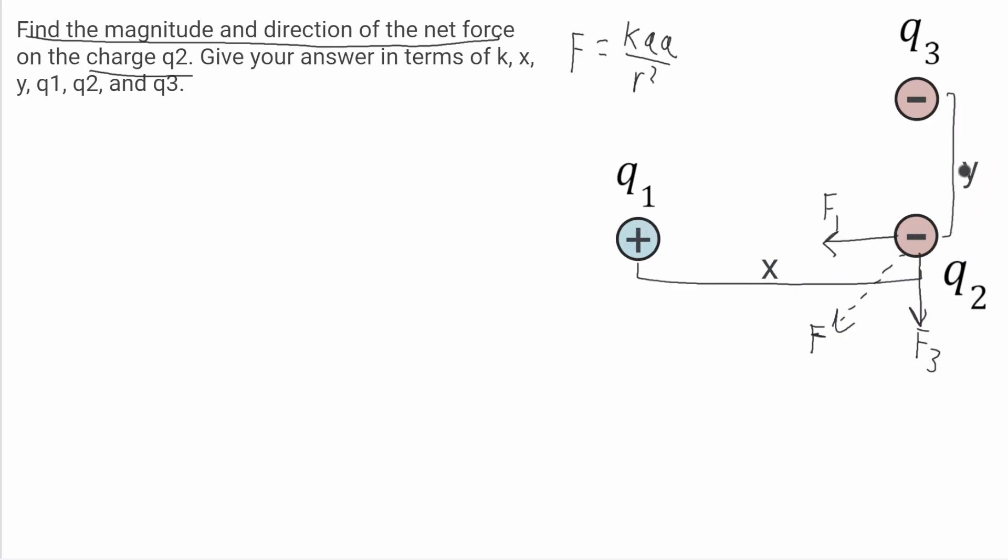In this case, it'll be the x and the y. I'll start with the force from q1. So F1 will be equal to k times q1 times q2 over x squared. F3 is going to be equal to k times q3 times q2 over y squared.